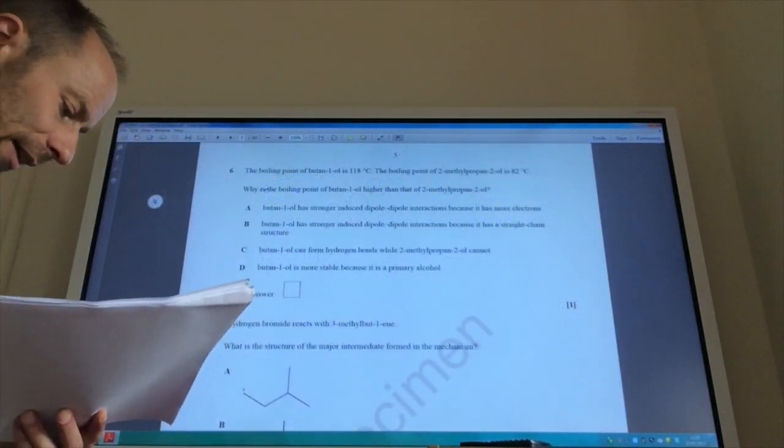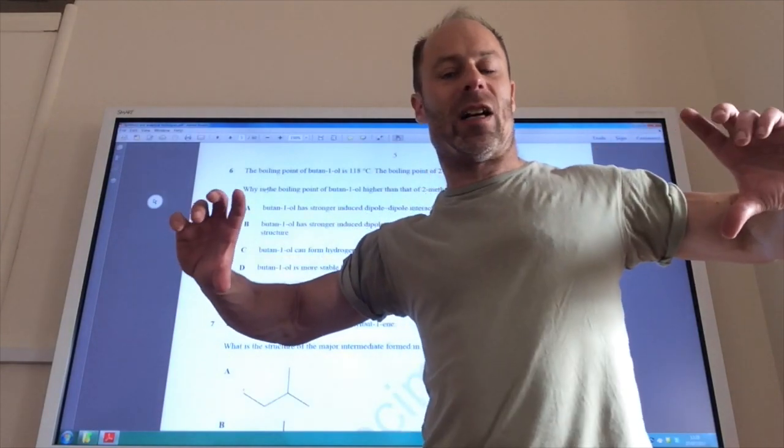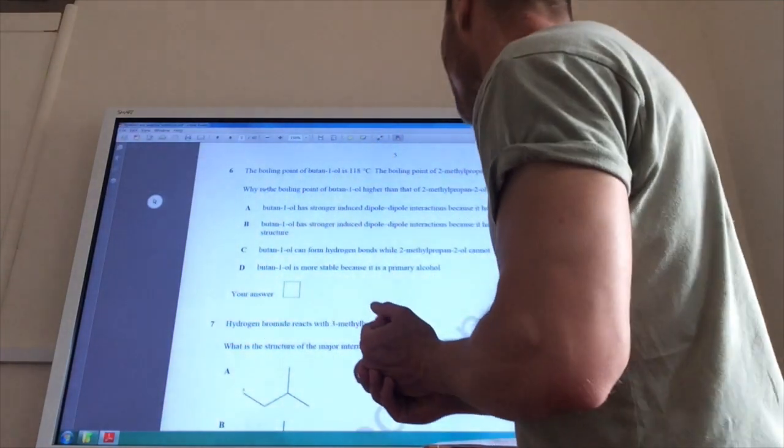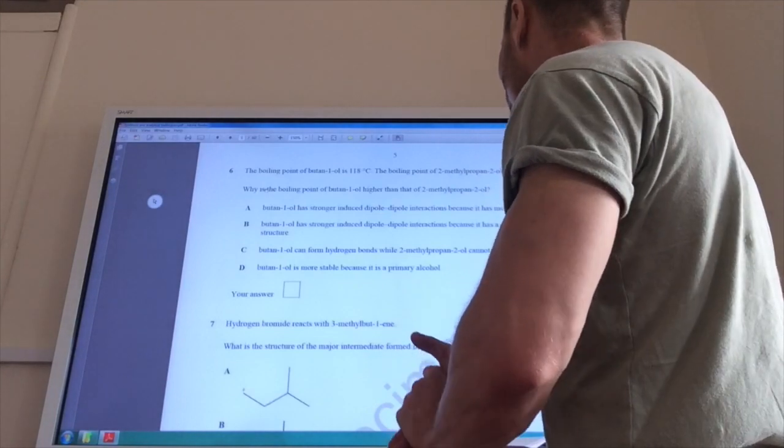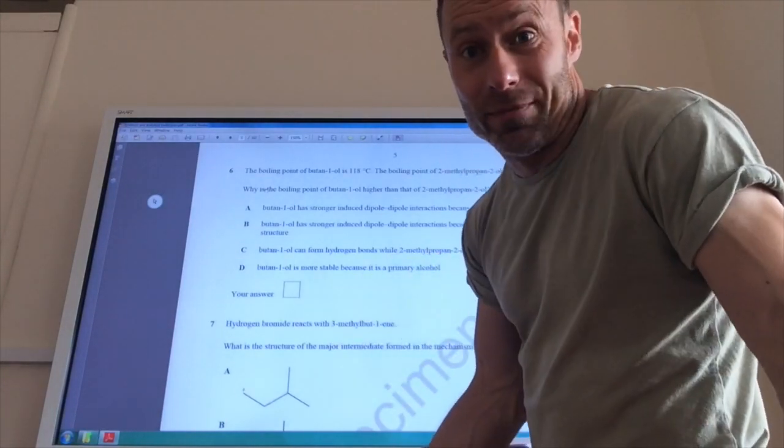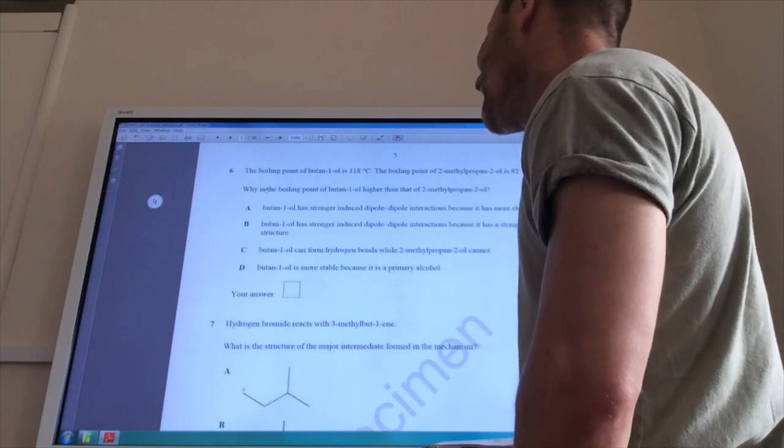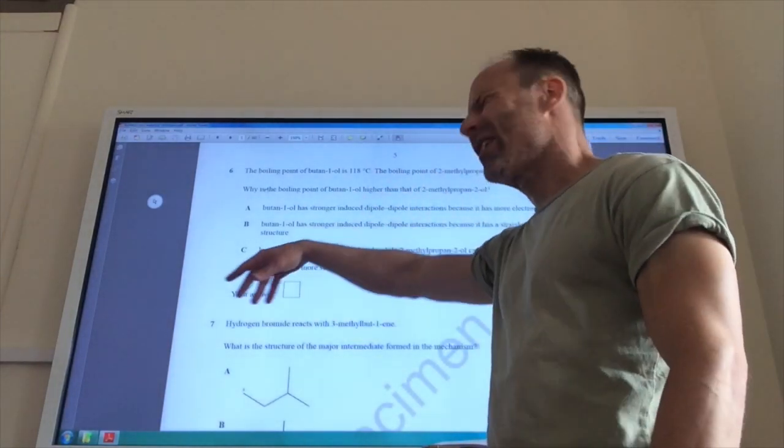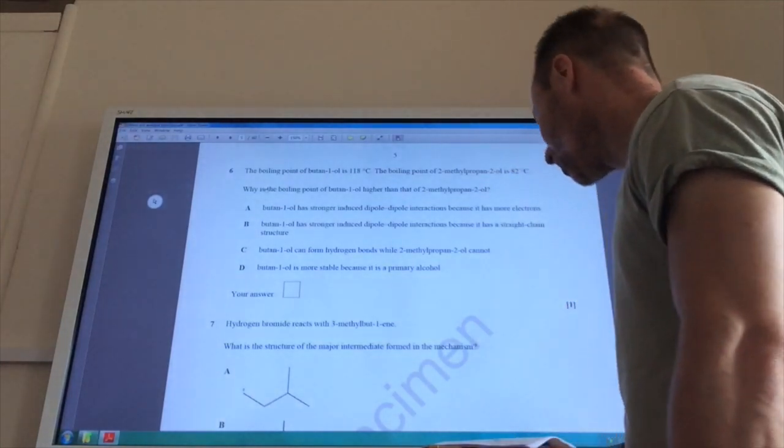Okay, so one on intermolecular forces now. Why is the boiling point of butan-1-ol higher than 2-methylpropan-2-ol? Okay, so, it's to do with the shape of the molecule. Butan-1-ol is a linear molecule, whereas 2-methylpropan-2-ol is more of a spherical molecule when you draw them out. They both have hydrogen bonds, but that would be the same for both, so we're not going to get into that. So, butan-1-ol has stronger induced dipole-dipole interaction because it has a straight structure. Yes, it is in fact B. The answer, of course, is B.